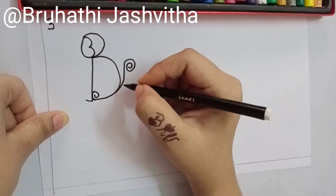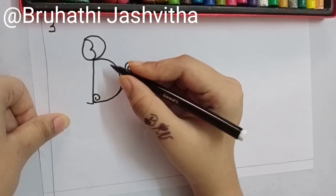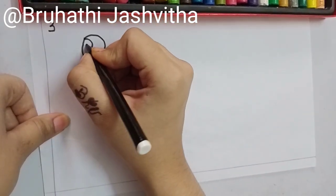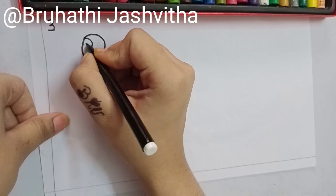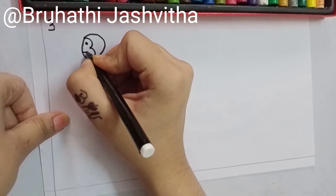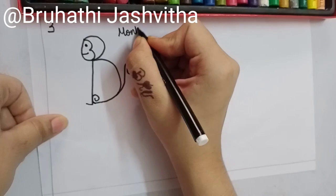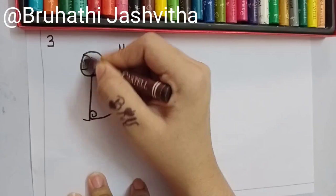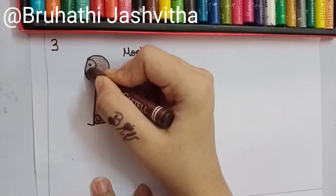Can you guess what it is? Yes, it is a monkey. So let us make one eye and a smiling face monkey. Now let us spell it: M-O-N-K-E-Y, monkey. Now let us color it.